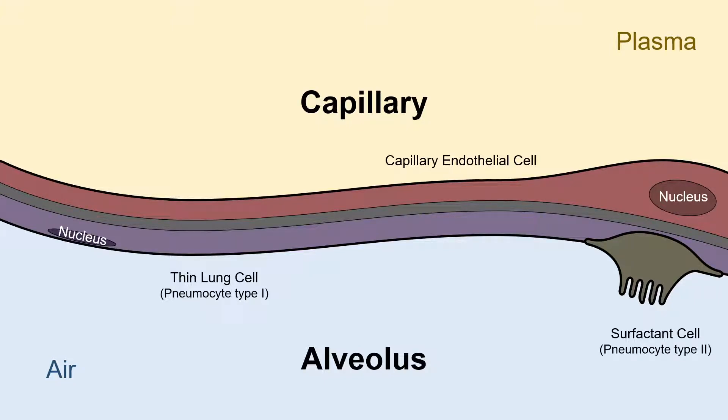The other type of cell that lines the alveolus is called a pneumocyte type 2. Again, the name isn't as important as understanding the function. These cells are scattered around the inside of the alveolus, and their job is to release surfactant.